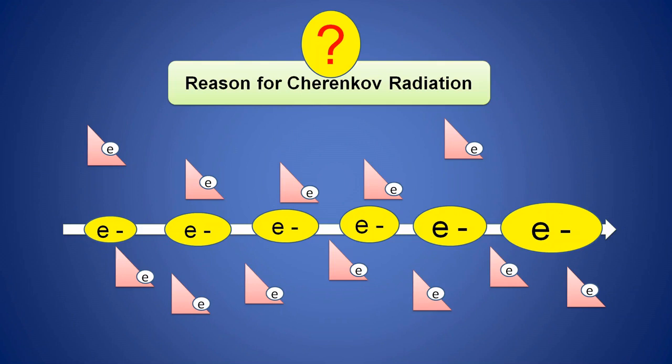While the electron travels with high velocity through a denser medium like water, it transfers some energy to the surrounding water molecules. By taking that energy from the electron, the electrons present in the water get excited. After some time, the excited electrons come back to the ground state and emit some radiation in the form of blue light. That emitted blue light is known as Cherenkov radiation.